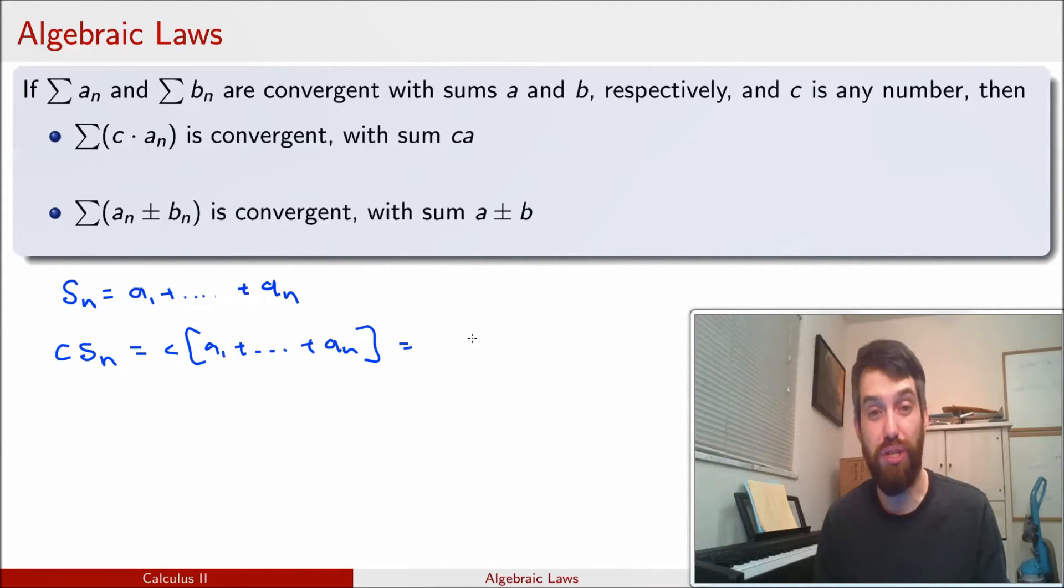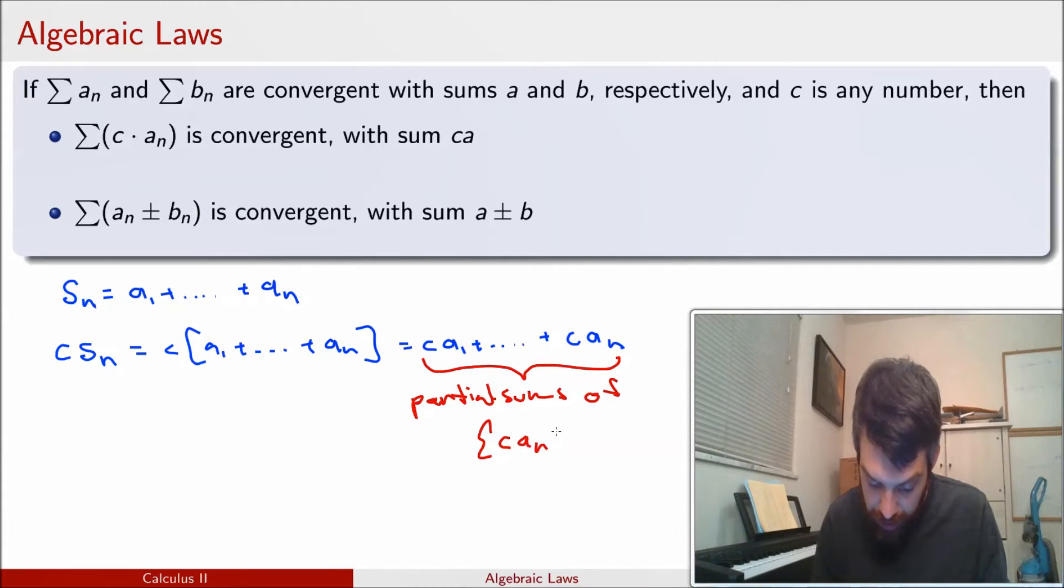And I can use just normal rules of algebra to say this is ca₁ plus caₙ. So this expression that I have over on the right-hand side is just the partial sums of the c times aₙ series, the series that goes from 0 up to infinity.